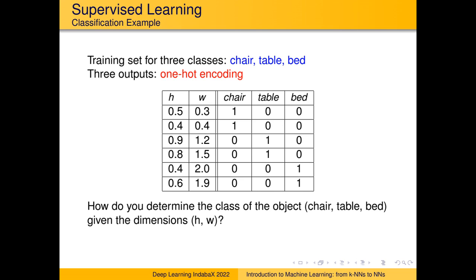For one-hot encoding, if I have three classes — chair, table, and bed — I expect my model to output three values. If it's a chair, only the chair bit is set to one, the other two are zero. If it's a table, only the table bit is one. So for every single class, there is a separate bit. That's one-hot encoding. Chairs are generally smaller than tables, beds are wider than chairs but maybe similar in height, and so there is indeed a pattern in the data.